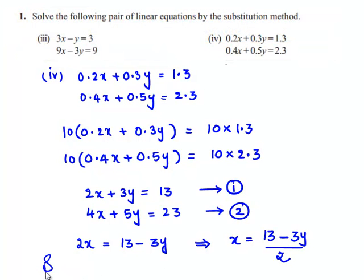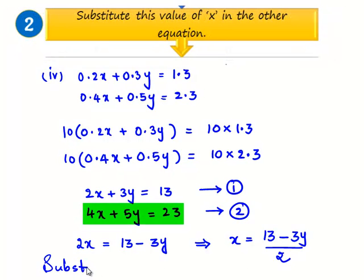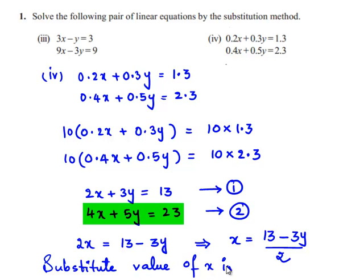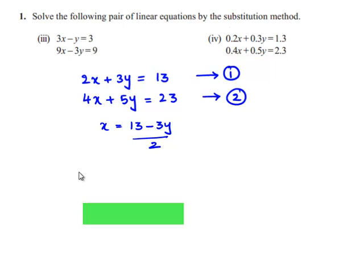Let us substitute the value of x in equation number 2. So the second equation becomes 4 times, in place of x let us write (13 - 3y) / 2, plus 5y = 23.